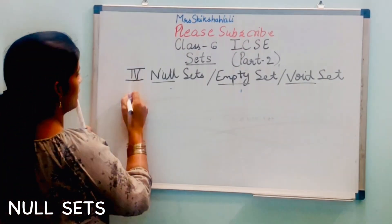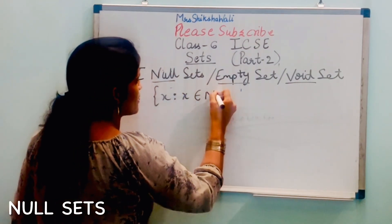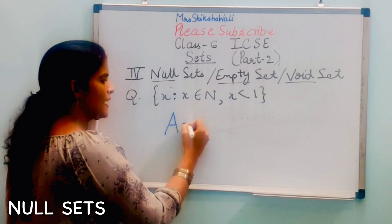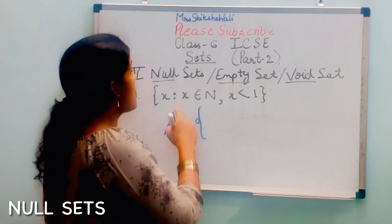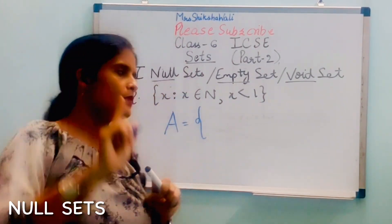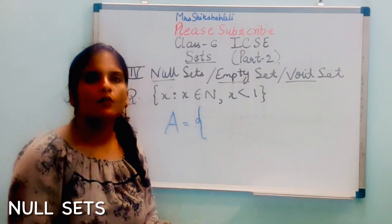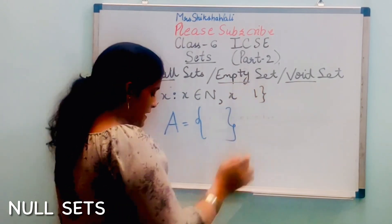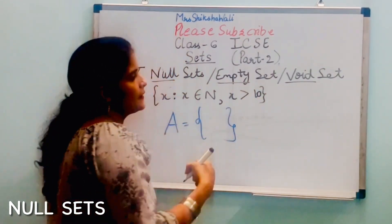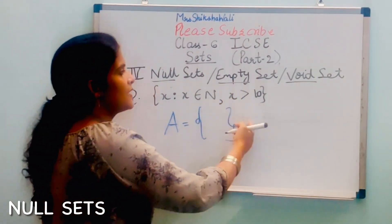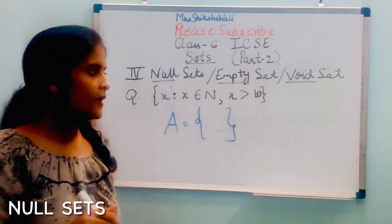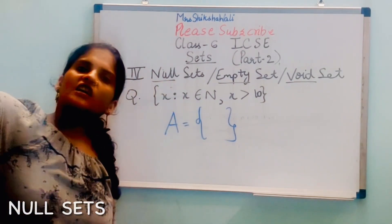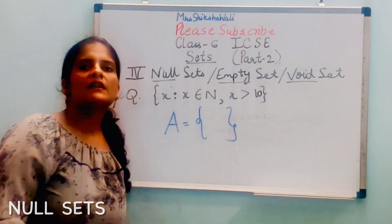Another example: x is such that x belongs to natural numbers and x is less than 1. Natural numbers start from 1, so there is no natural number less than 1 — it is also a null set. But if the condition were x > 10, you would write 11, 12, 13, ... so on — that is an infinite set, because you cannot count all natural numbers greater than 10.